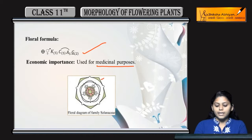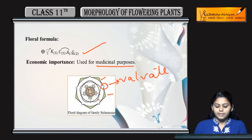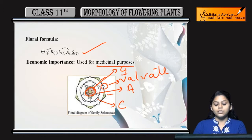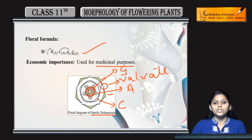This is the floral diagram. Sepals are fused showing valvate estivation. These are the corolla petals, androecium with five stamens, and bicarpillary gynoecium which is superior. This was the floral diagram of family Solanaceae.